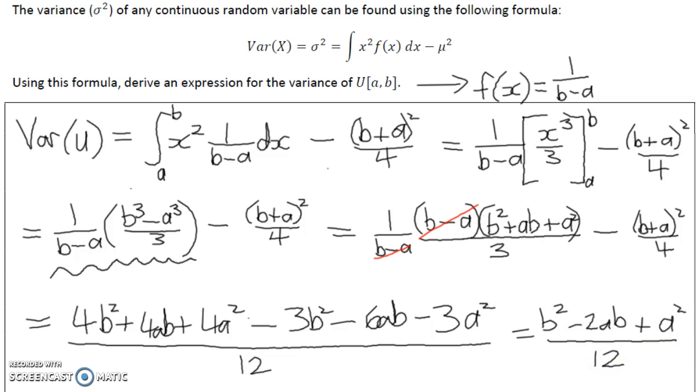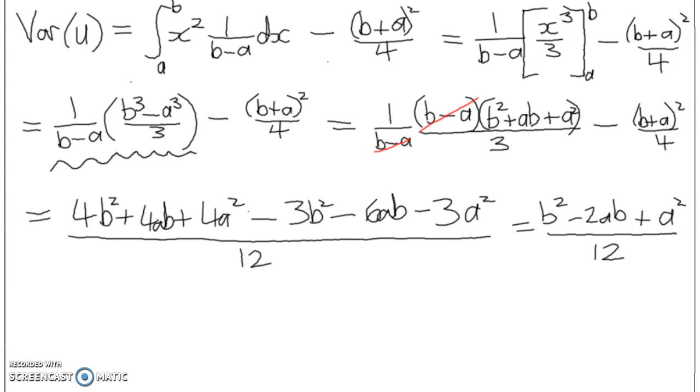And this numerator, hopefully you recognise, can be factorised. It's a perfect square, b minus a all squared over 12. So there we have the formula for the variance of the uniform distribution. A great question. You can go from there.